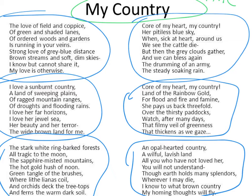The opening stanza describes the British landscape, but this is not the country that Dorothea loves. It is the Australian bush that calls to her heart, and the remaining stanzas are an anthem to her homeland. She uses language to personify Australia, gives it a gender, and invites the audience to share and identify with her feelings — saying that those who are not Australian would not understand the love she feels.